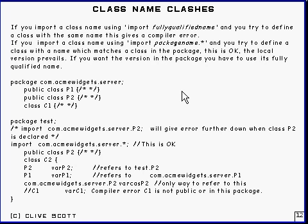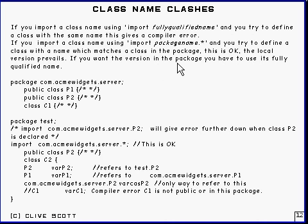So what happens if, instead of importing like that, you use import-on-demand — so you import PackageName.* — and you try to define a class with a name that matches one of the classes in the package that you're importing from? Well, it turns out that this is okay, and the local version that you declare within the package is going to prevail everywhere. And if you want the version that you've imported, then you've got to use its fully qualified name.